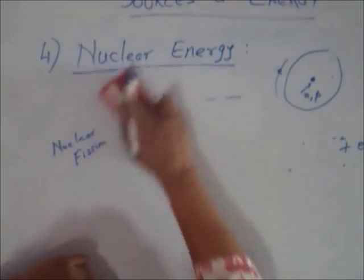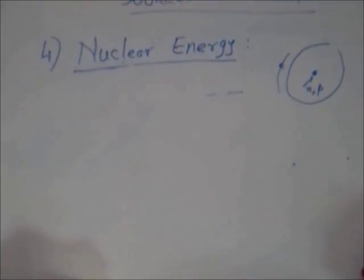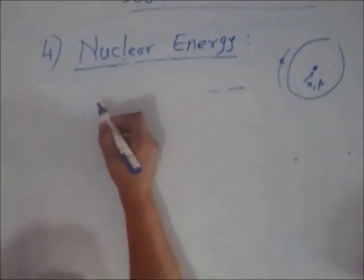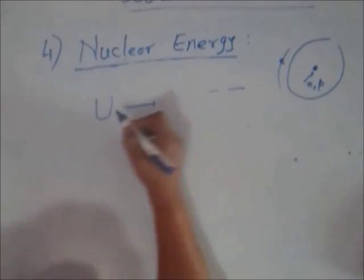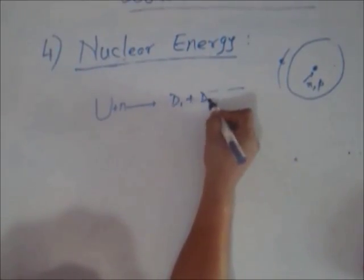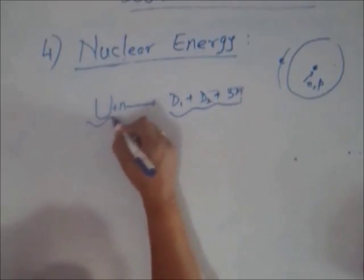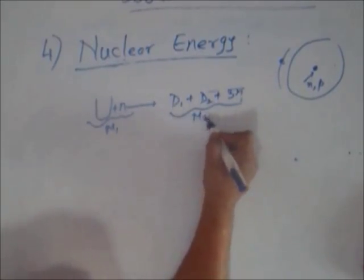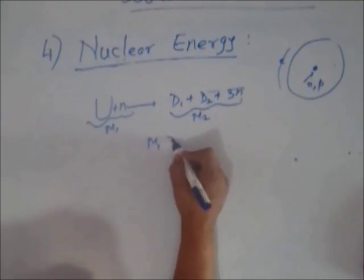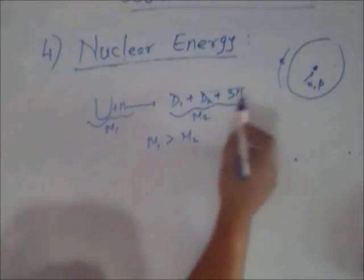This chain reaction by fission in uranium is called nuclear energy, and it is utilized with reasonable success in various countries, including India. This happens because the mass of uranium plus the mass of the neutrons - let's call this M1 - is only slightly greater than the mass of the daughter products M2.